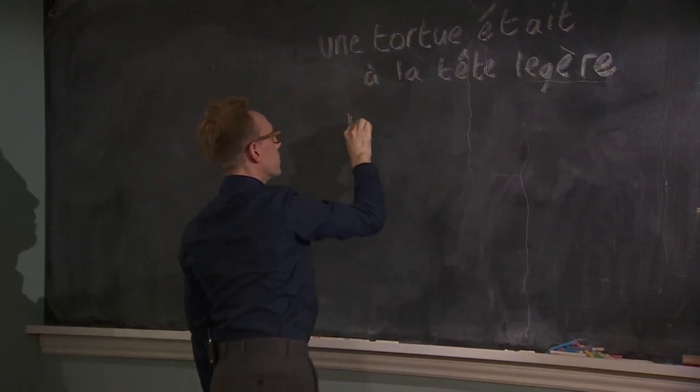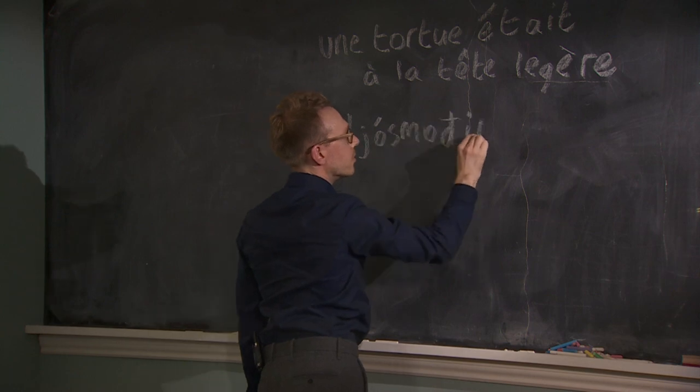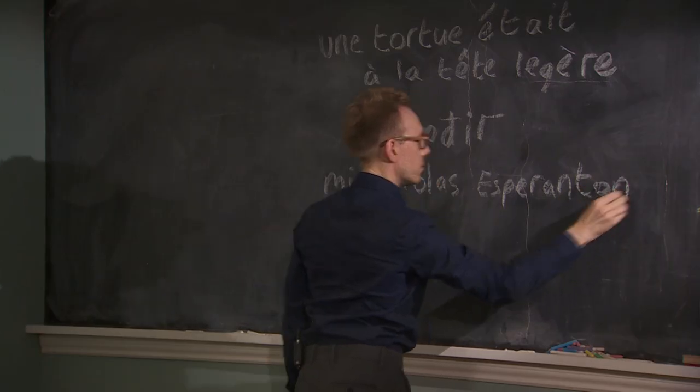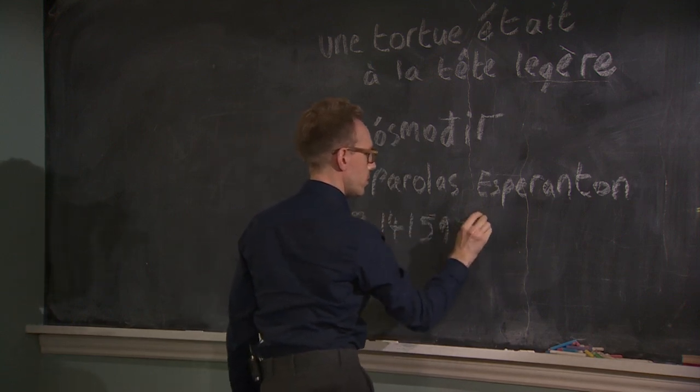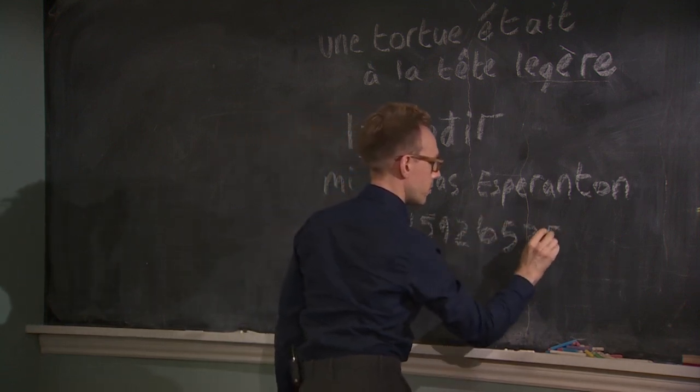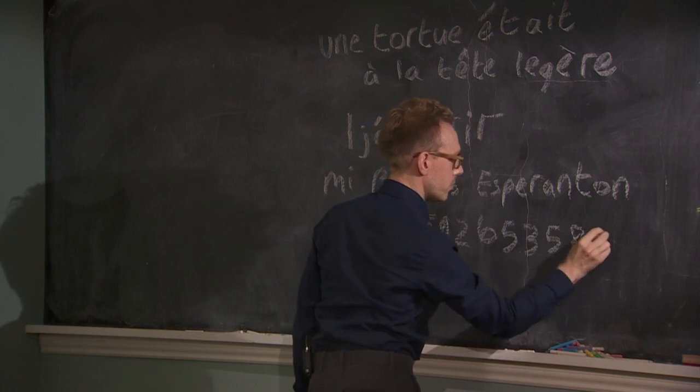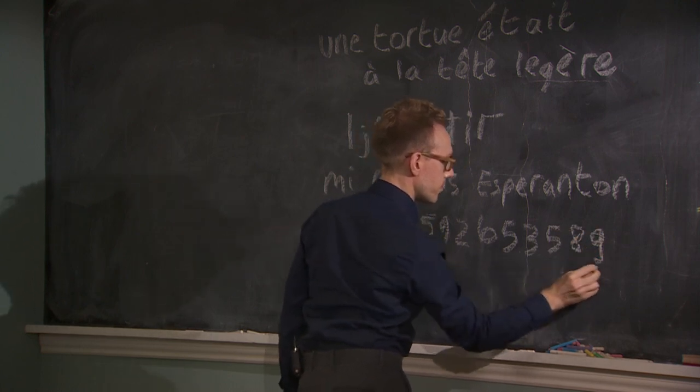He may have started with numbers, but Daniel Tammet also has an intense relationship with words. He speaks several languages, and his new book is part travelogue, part meditation on the subject of how we communicate in all its variety.